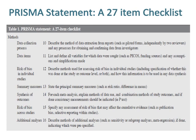Item 13 regarding summary measures is to state the principal summary measures, such as risk ratio or difference in means. Item 14 regarding synthesis of outcomes is to explain, for each meta-analysis, methods of data use and combination of study outcomes, and if done, consistency measurements should be indicated such as the P-test. Item 15 regarding risk of bias across studies is to specify any assessment of risk of bias that may affect the cumulative evidence, such as publication bias across studies or selective reporting within studies. Item 16 regarding additional analyses is to describe methods of additional analyses such as sensitivity or subgroup analyses, meta-regression, if done, indicating which were pre-specified.